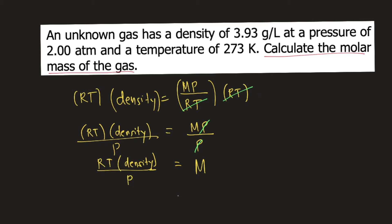Then let's substitute the given numbers. So the molar mass is equal to R, which is the gas constant, 0.0821 liter atmosphere per mole kelvin.